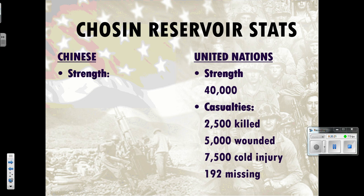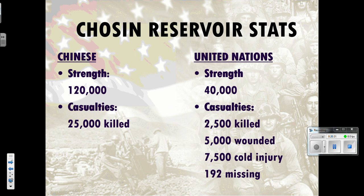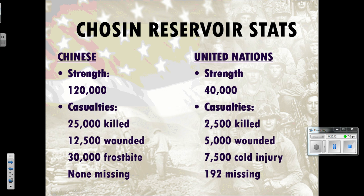The Chinese had a strength of 120,000 — outnumbering us 3 to 1. Yet their casualties were: 25,000 killed, 12,500 wounded, and 30,000 with frostbite or cold injuries. Their equipment wasn't as good as ours, and they fought in waves — not caring how many of their people got killed, similar to Stalingrad. Despite the tough situation, our smaller force did significant damage to the enemy.